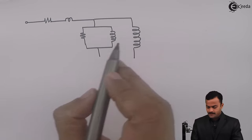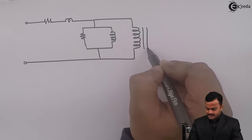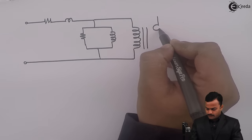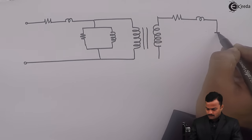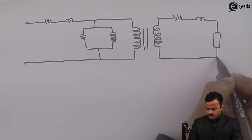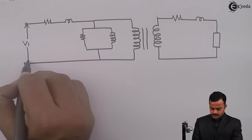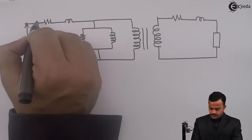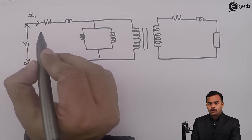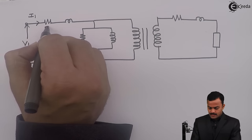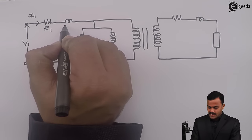This is the primary side of a transformer, and on the secondary side the equivalent circuit diagram will look like this. There is a primary voltage V1, which will give rise to a primary current I1. That current will flow through primary winding resistance R1 and primary side leakage reactance X1.